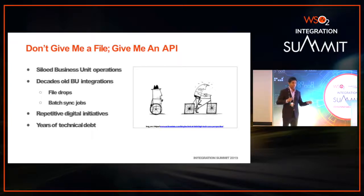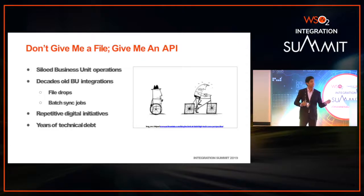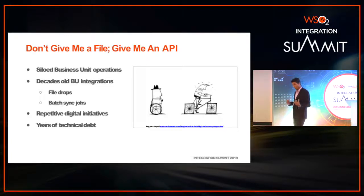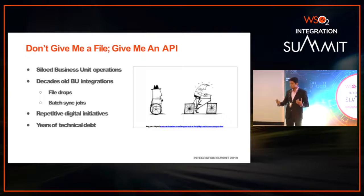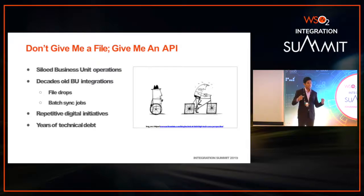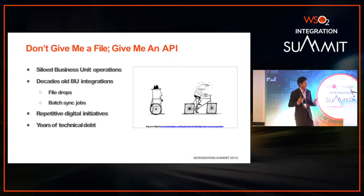But if you had APIs with each business unit exposing their capabilities, then other business units get access to more information. Like I mentioned earlier, they can innovate on top of them, and as a company you can access more information, find new revenue sources, and increase your opportunities.